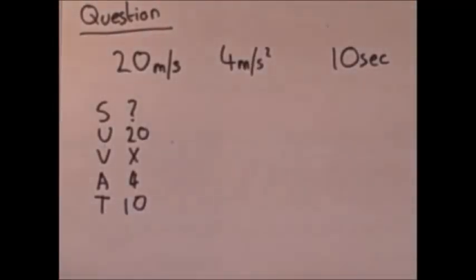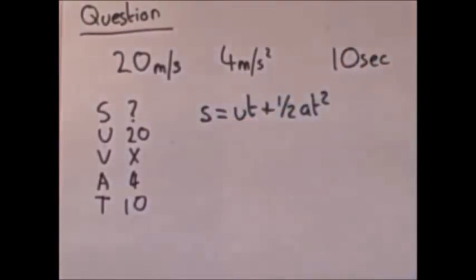This means we need the formula that does not contain V. That is, S equals U times T, plus one half times A times T squared.